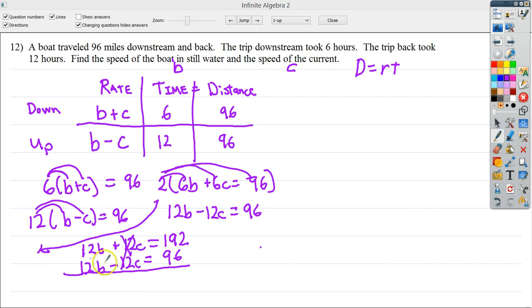Now, the C's cancel out. 12 and 12 would be 24, of course. And then the 192 plus 96 would be 280—or, sorry—yeah, 288, right there. Now, I need to get B by itself. That's the worst 8 ever. There we go. That's better. Divide by 24 on both sides.